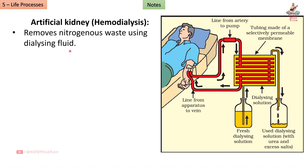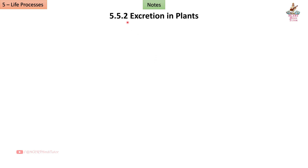Artificial kidney (haemodialysis) removes nitrogenous waste using dialysis fluid, used in kidney failure. The patient's blood passes from an artery through tubing made of a selectively permeable membrane and into dialysis solution, then returns via a vein. Fresh dialysis solution enters and used dialysis solution containing urea and excess salts exits.